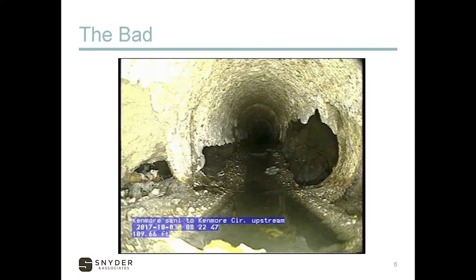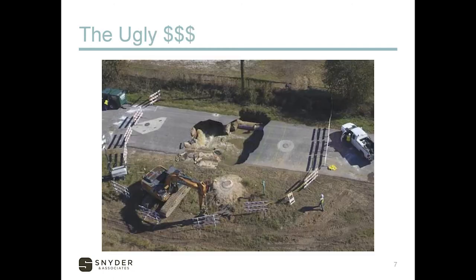The bad: this is a sewer that has been forgotten about and not maintained. The window for the stitch in time has long since passed. When we televised this line, the camera got to a void — you can kind of see it on the right — it panned right and looked into a room that the crawler could have turned into and taken a nap. The flow line's gone, and the wastewater is flowing directly on dirt.